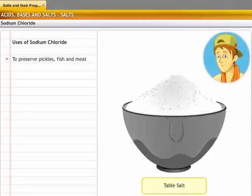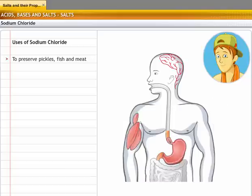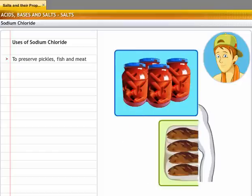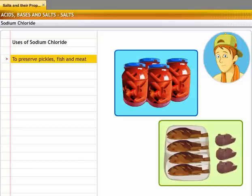Common salt is an important constituent of food and is referred to as table salt. Common salt enriches the flavor of food. It plays an important role in the functioning of our nervous system, the movement of muscles and in the production of hydrochloric acid in our stomach. It is also used as a preservative in pickles, fish and meat.